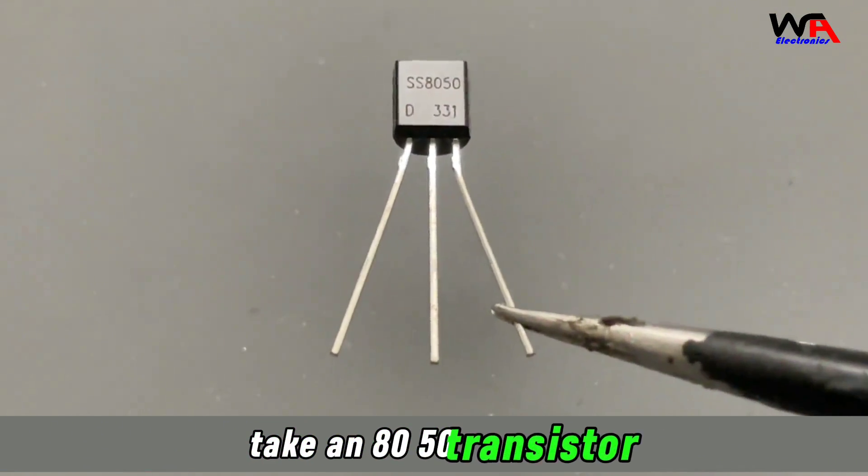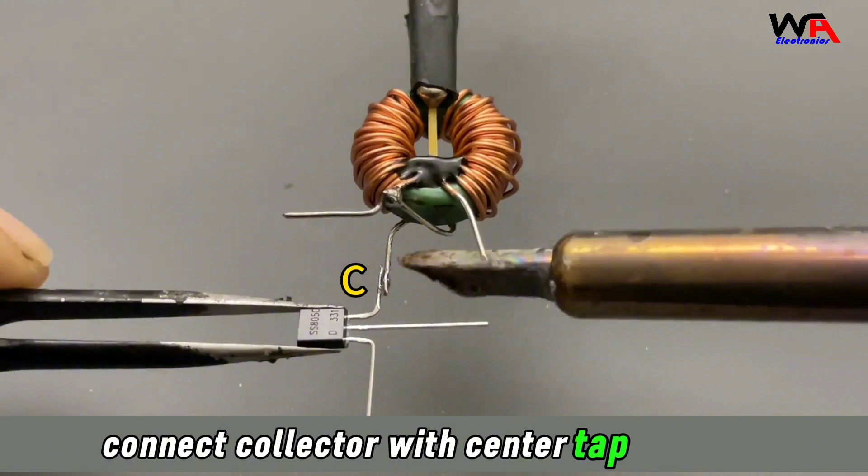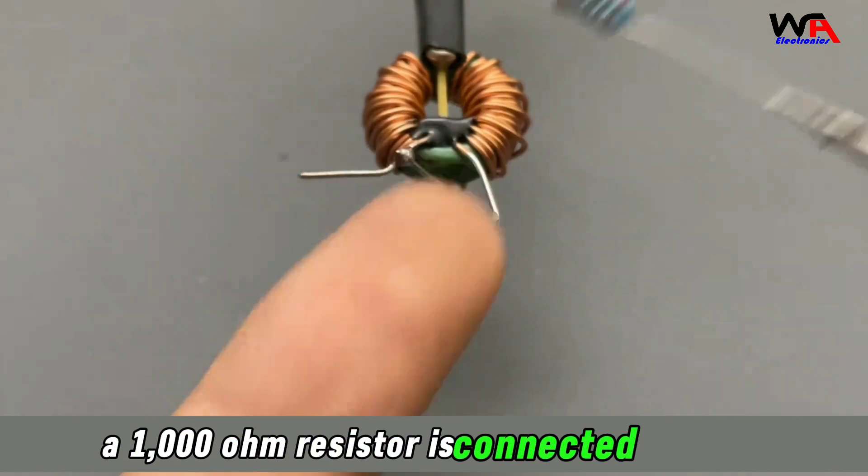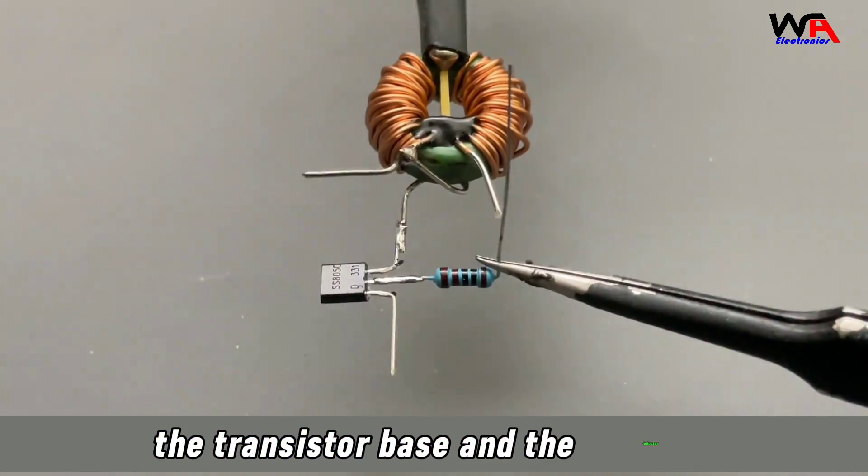Take an 8050 transistor and connect the collector with center tap inductor. A 1000 ohm resistor is connected between the transistor base and the inductor.